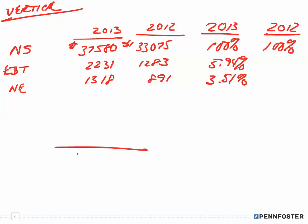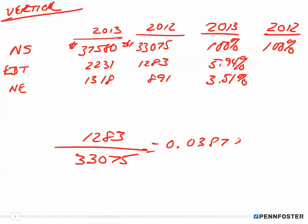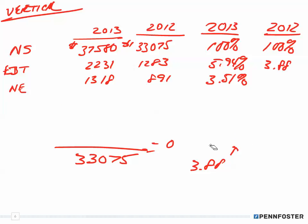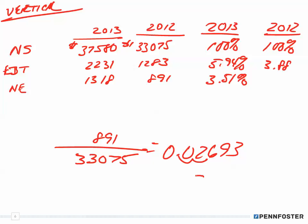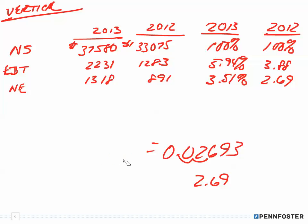For 2012, the denominator is now 33,075. Earnings before taxes: 1,283 divided by 33,075 gives 0.03879, which rounds to 3.88%. Net earnings: 891 divided by 33,075 gives 0.02693, which rounds down to 2.69%. That completes the vertical analysis.